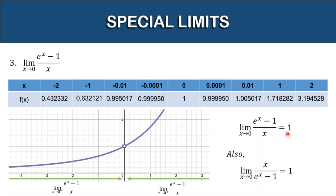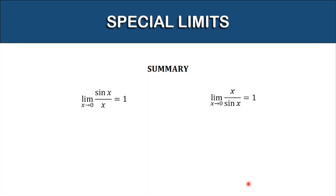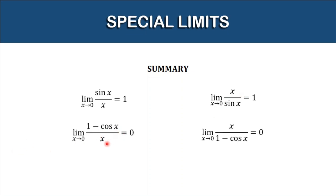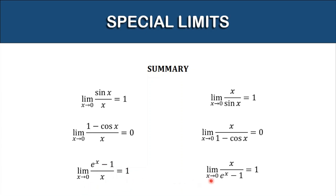Also, the limit of x all over e raised to x minus 1 as x approaches 0 is also equal to 1. Now for the summary: the first special limit is the limit of sine x over x as x approaches 0, equal to 1, and also its reciprocal. The second is the limit of 1 minus cosine x all over x as x approaches 0, equal to 0, also its reciprocal. The third is the limit of e raised to x minus 1 all over x as x approaches 0, equal to 1, also its reciprocal.